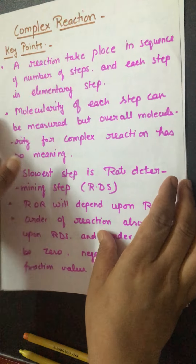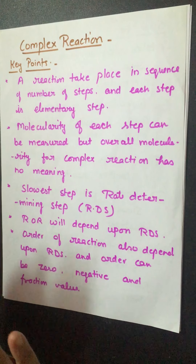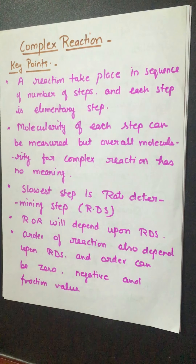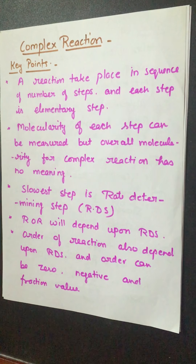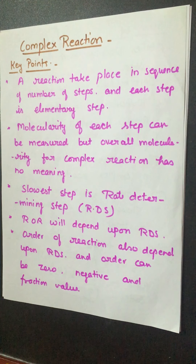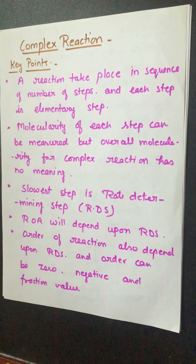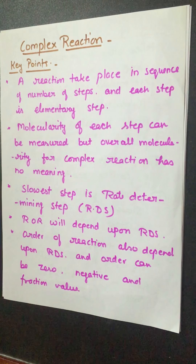The second type is the complex reaction — very important. By the name, it's clear it takes place in more than one step. Since it takes place in more than one step, an intermediate will definitely be formed. Each single step is considered a simple or elementary step. For example, if a complex reaction takes place in three steps, all three steps separately act as simple or elementary steps. We can find the molecularity of each step, but overall molecularity for the complex reaction as a whole has no meaning.